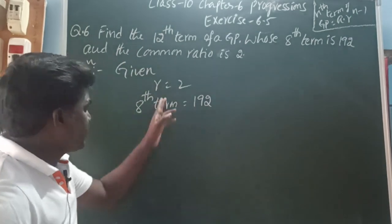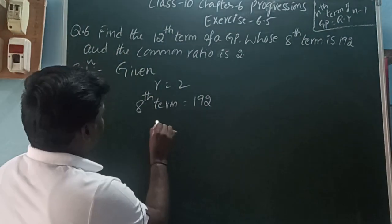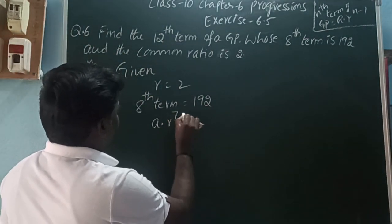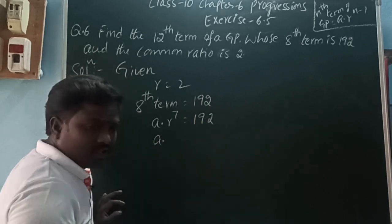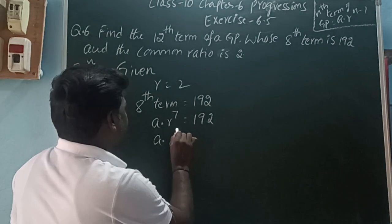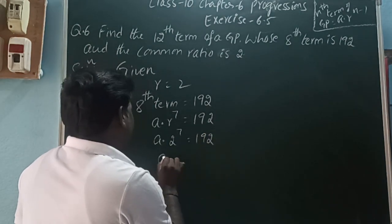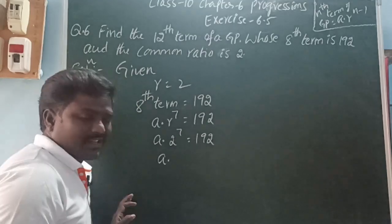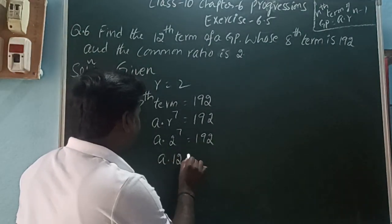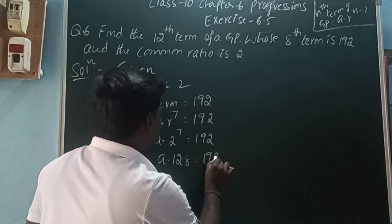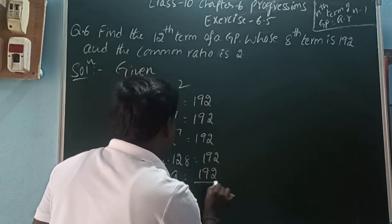Here r is 2. The 8th term formula: A into r to the power of 7 is equal to 192. So A into 2 to the power 7 is equal to 192. 2 to the power 7 is 128. So A into 128 is equal to 192. Therefore A is equal to 192 by 128.